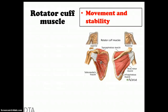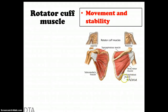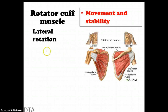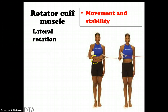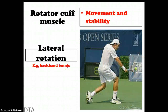A specific detail needed for AS is the rotator cuff muscles, located in the shoulder. The four muscles are: supraspinatus, subscapularis, teres minor, and infraspinatus. Their purpose is movement and stability. The movement they provide includes lateral rotation — moving the hand out away from the body — and a sporting example of this is a backhand in tennis, where you move your arm away from the central line of your body.